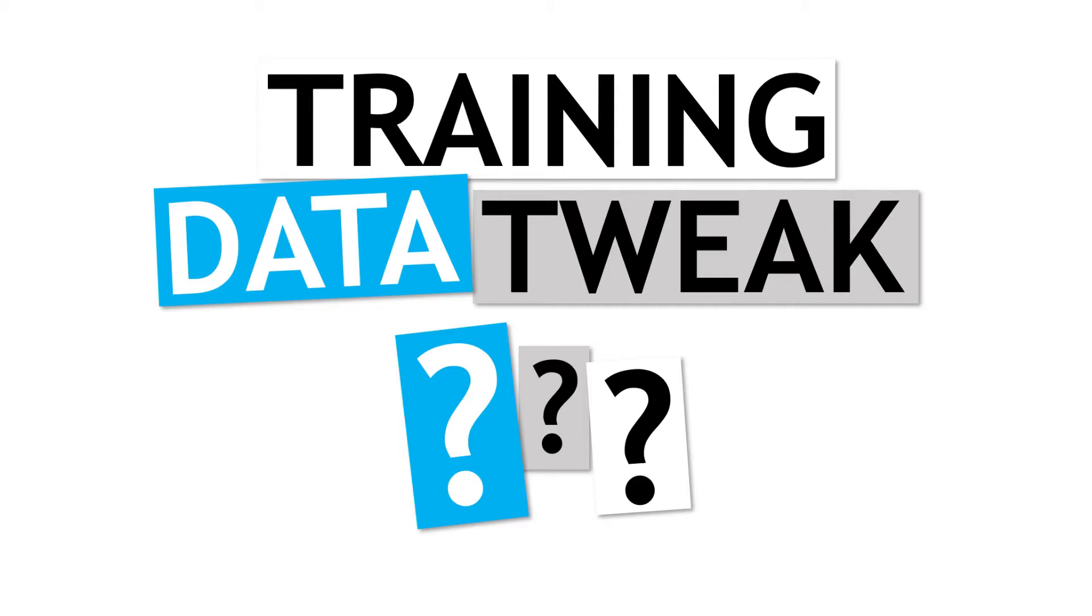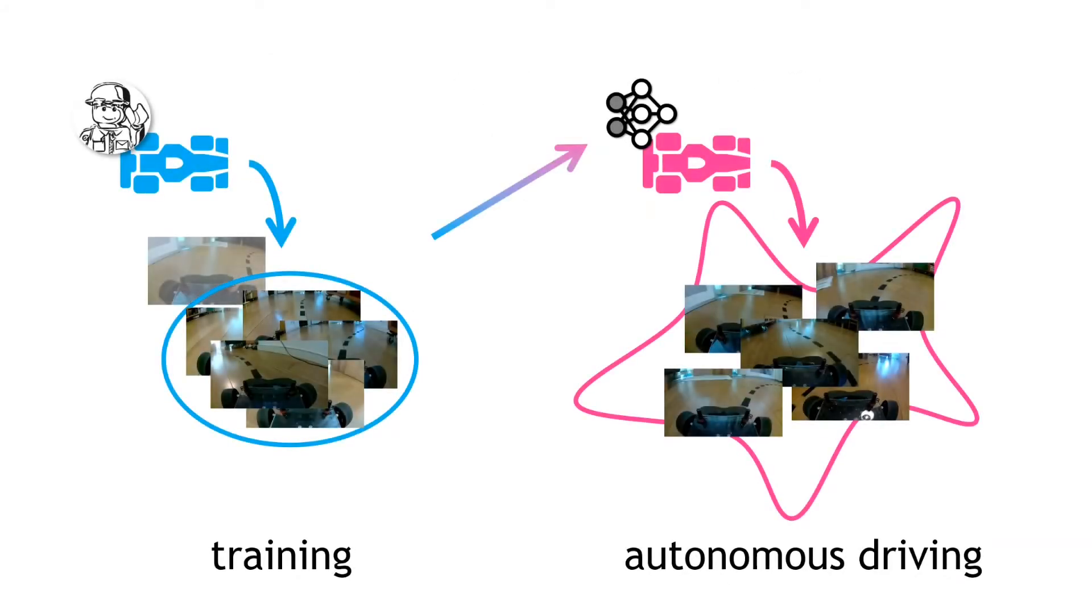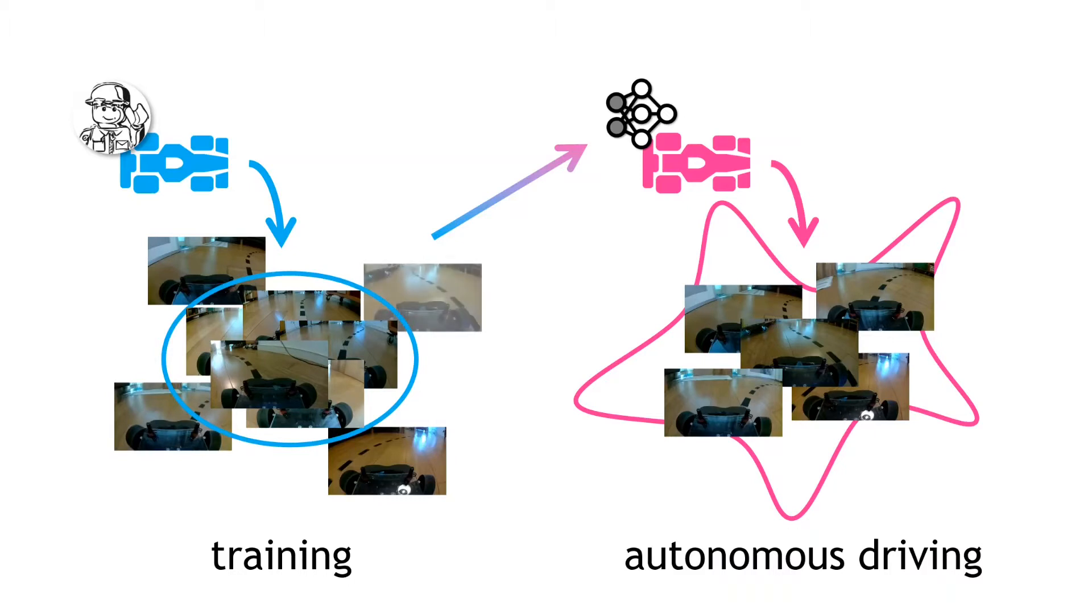Another approach is to try and expand the scope of the training data. We want to train the policy so that it makes some reasonable predictions even when the vehicle has drifted off from the ideal driving line. The basic idea is to make the training data look a bit more like the data experienced during the autonomous driving.